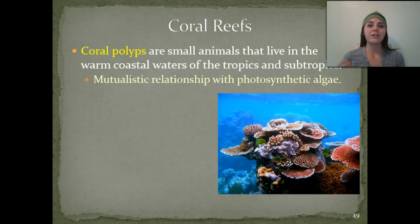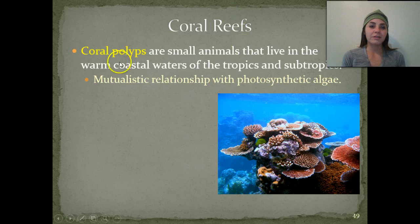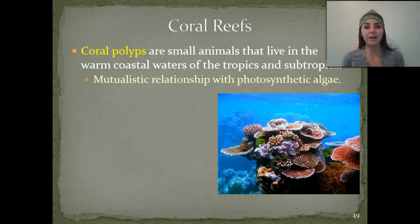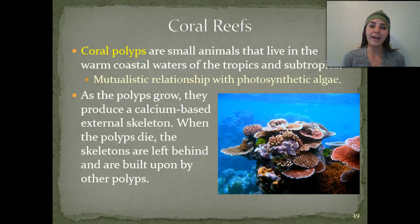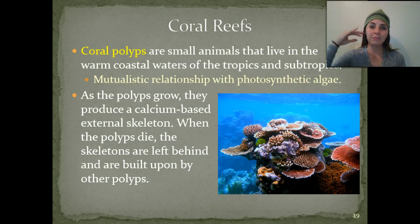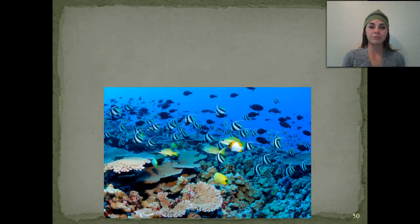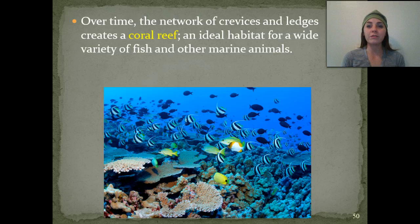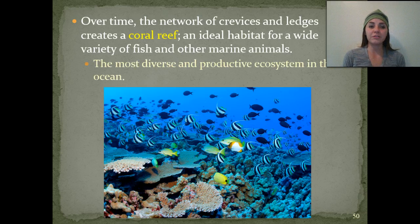Next, we're going to be discussing coral reefs. Coral reef ecosystems are beautiful, amazing, and full of life, but unfortunately a lot of them are dying off due to coral bleaching. Coral polyps are small critters that live in the warm coastal waters of the tropics and subtropics, forming a mutualistic symbiotic relationship with photosynthetic algae. As those polyps grow, they produce a calcium-based external skeleton. When the polyp dies, the skeletons are left behind — those are what form the reef. Over time the network of crevices and ledges creates the coral reef, which is the most diverse and productive ecosystem in the entire ocean.